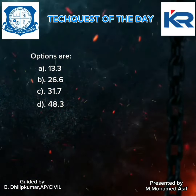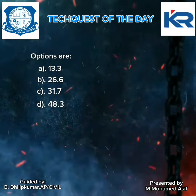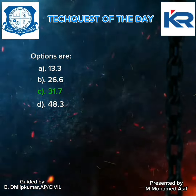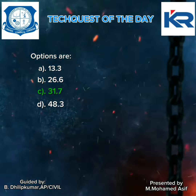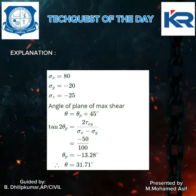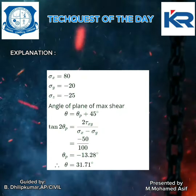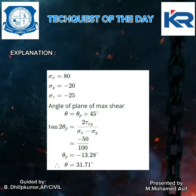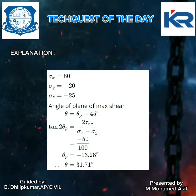The correct option is option C: 31.7. Explanation: sigma x equals 80, sigma y equals minus 20, tau xy equals minus 25. We need to find the angle of the plane of maximum shear stress.